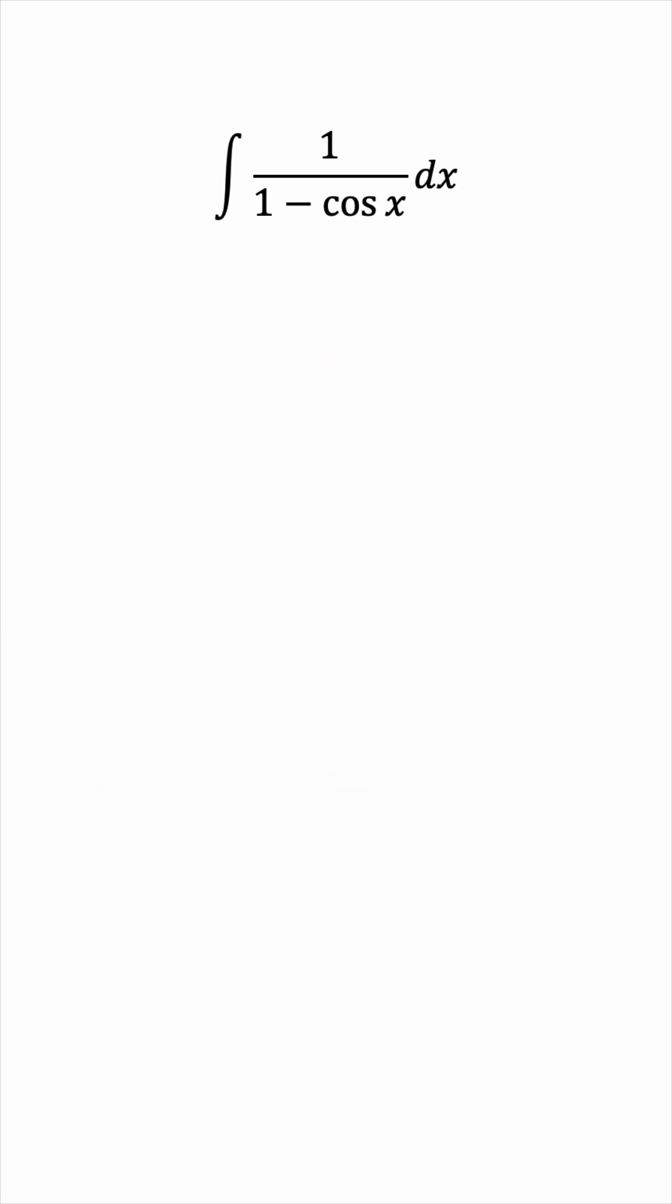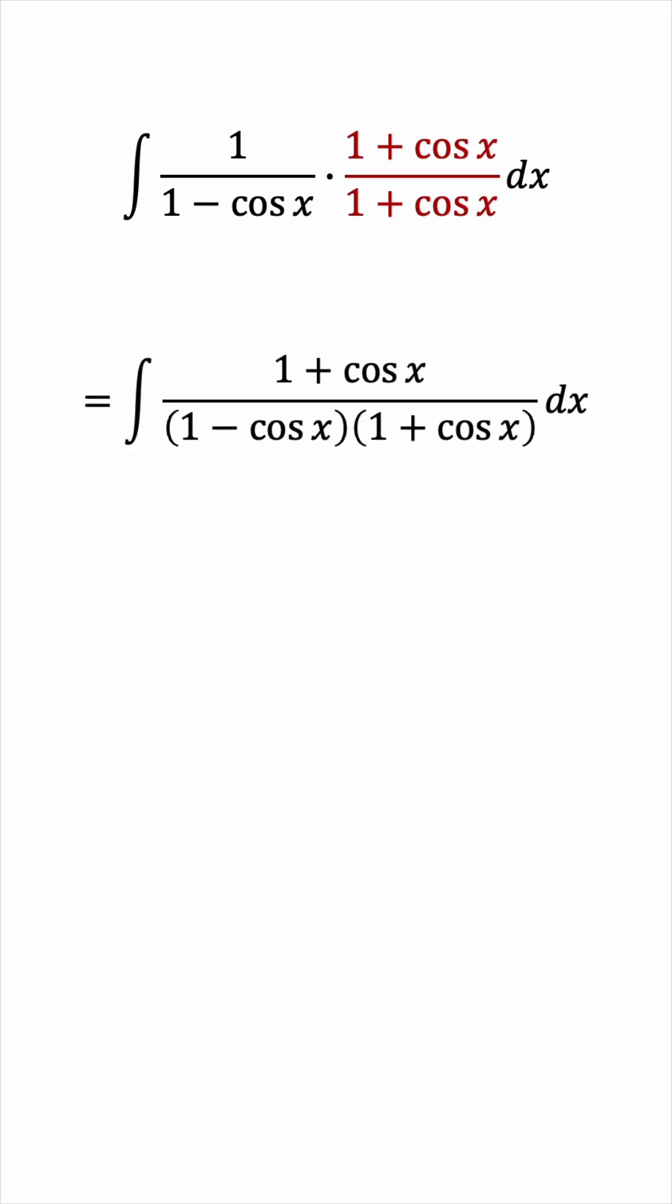But we can actually produce it by multiplying the numerator and denominator by 1 plus cosine x. It's as if we're multiplying by 1, so that's legal, we're not changing the integrand. But the difference of squares in the denominator now allows us to see the 1 minus cosine squared we want it to have. And now we can rewrite it as sine squared x in the denominator.